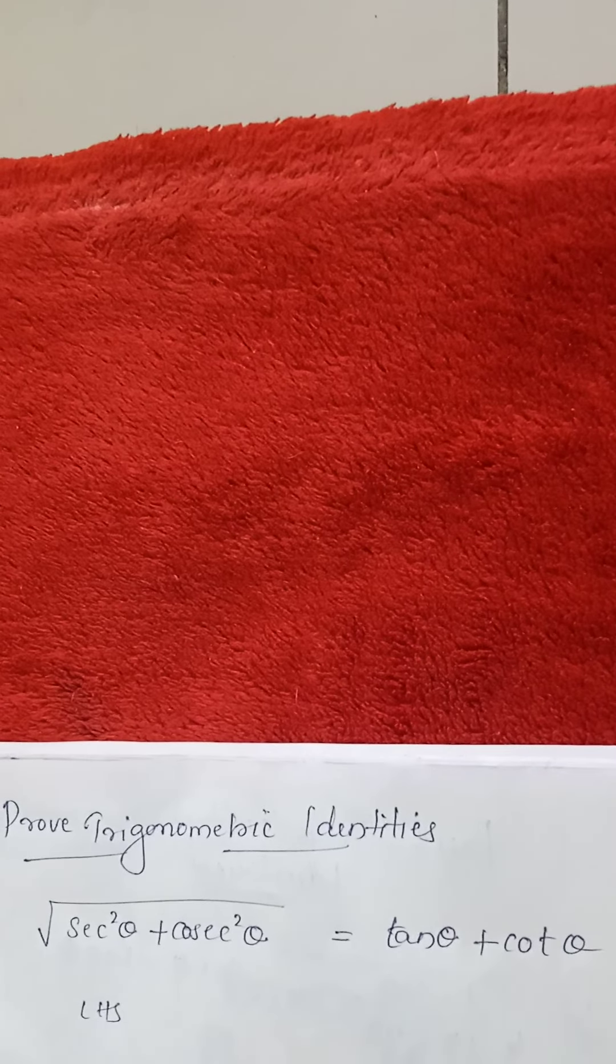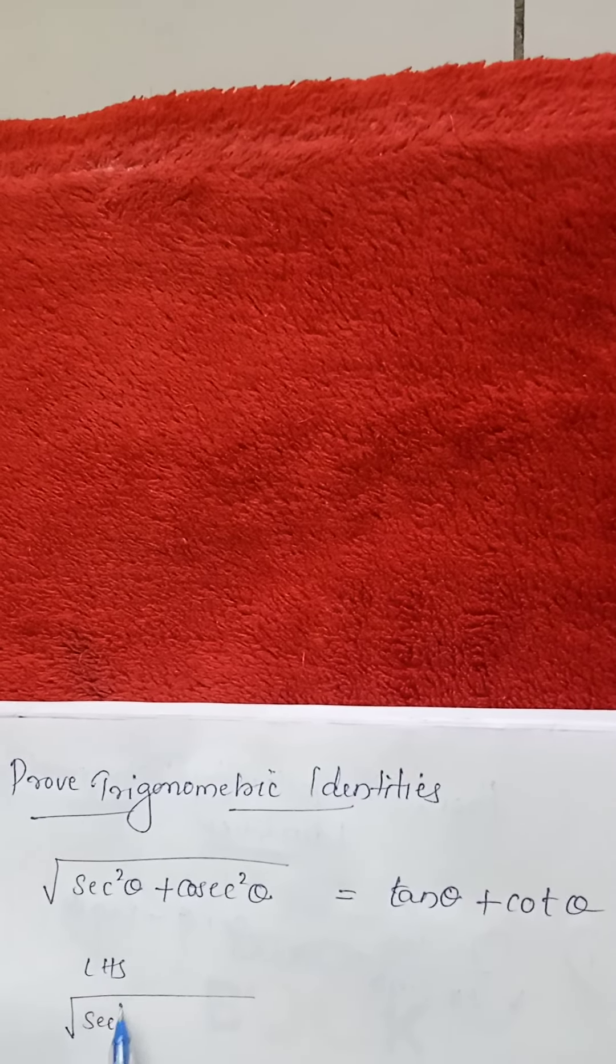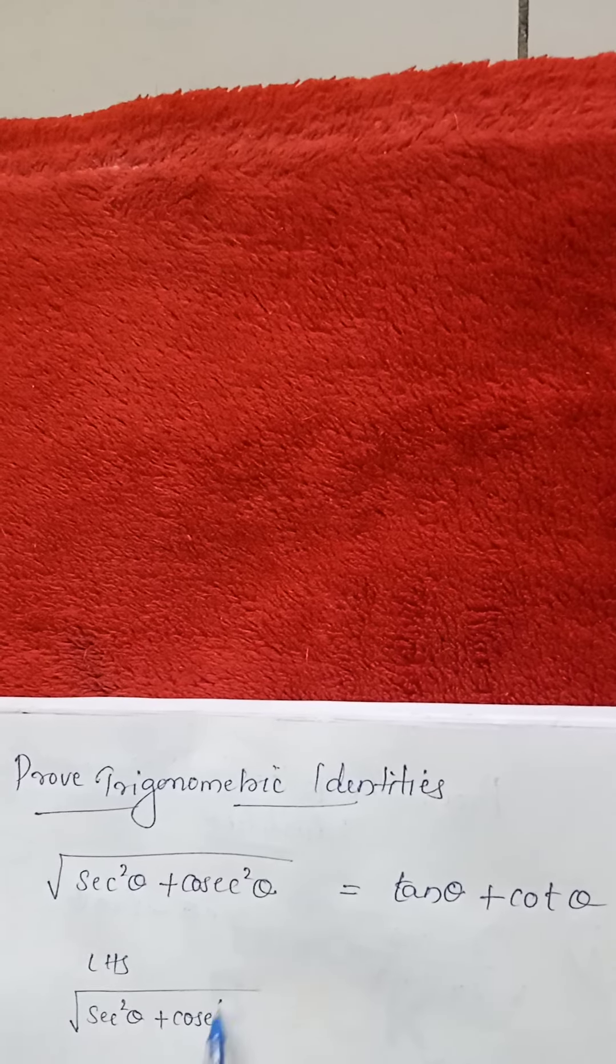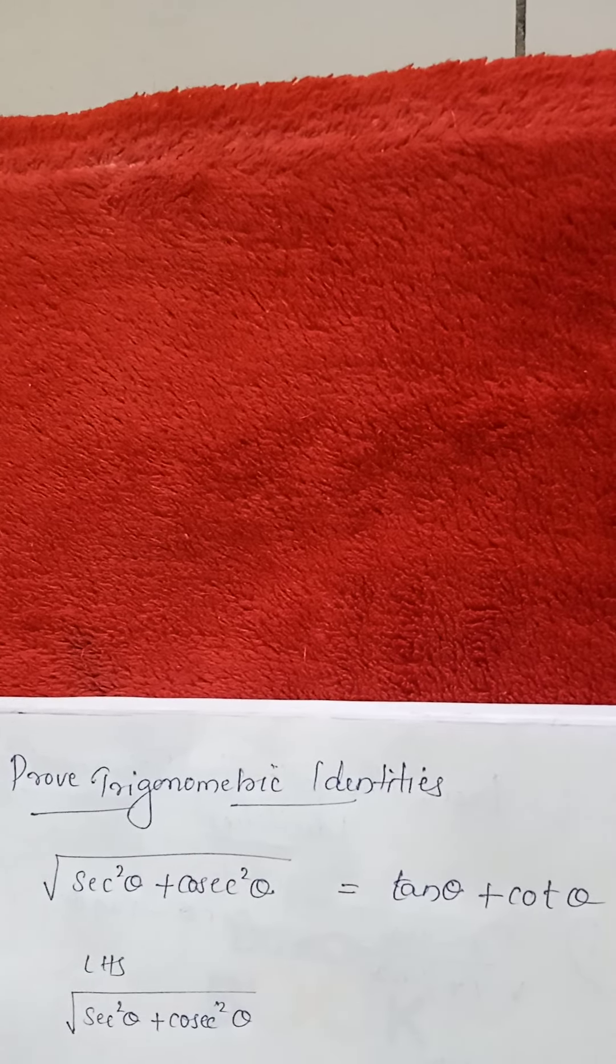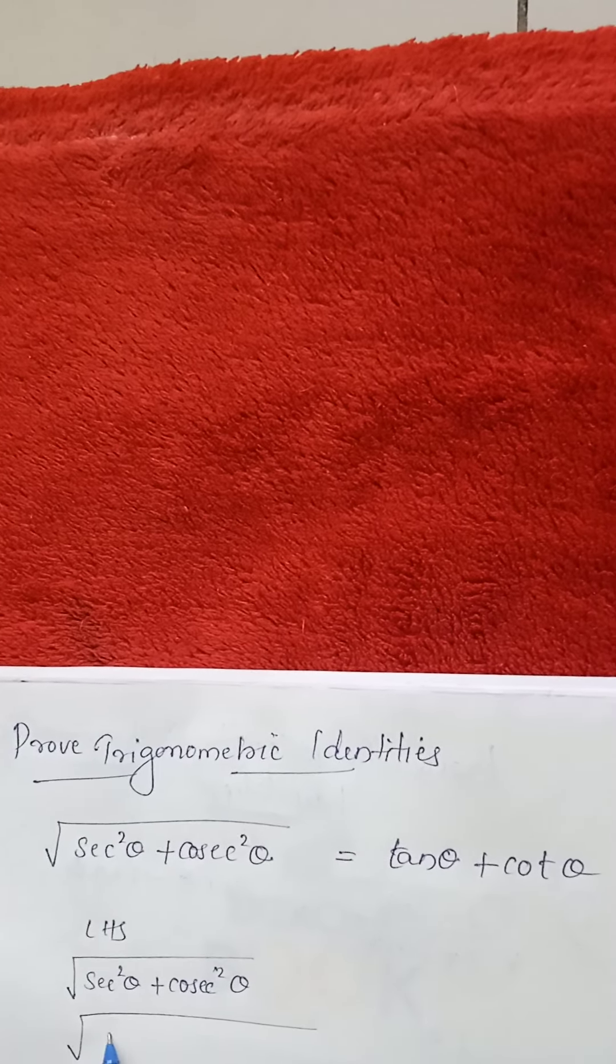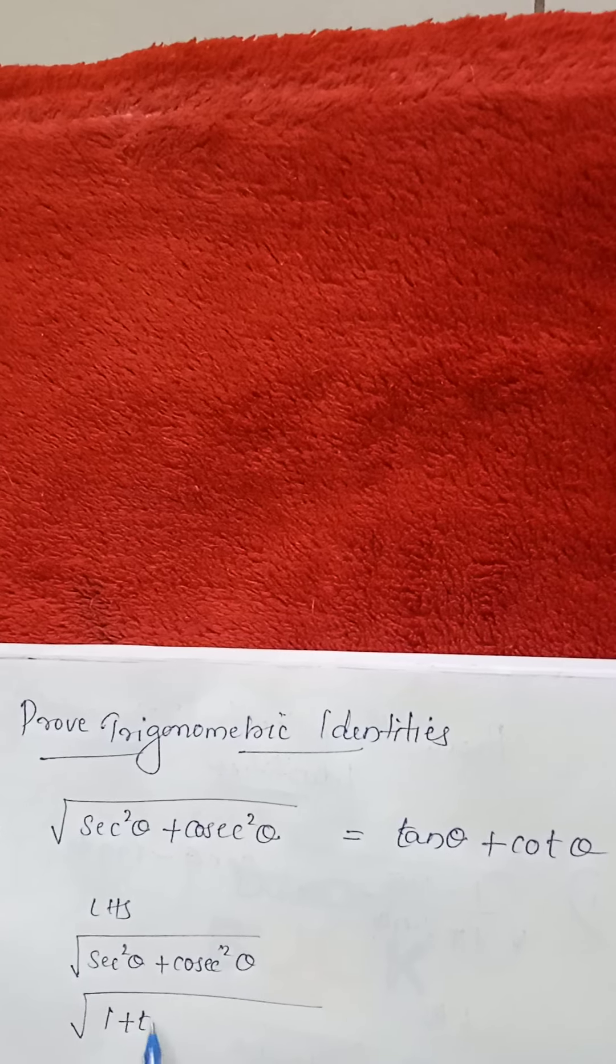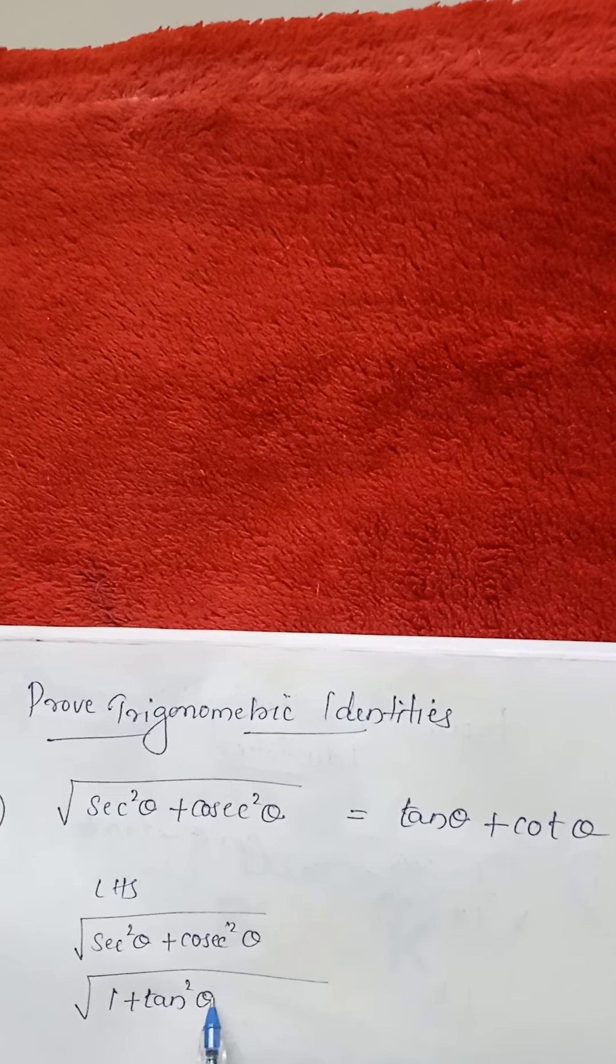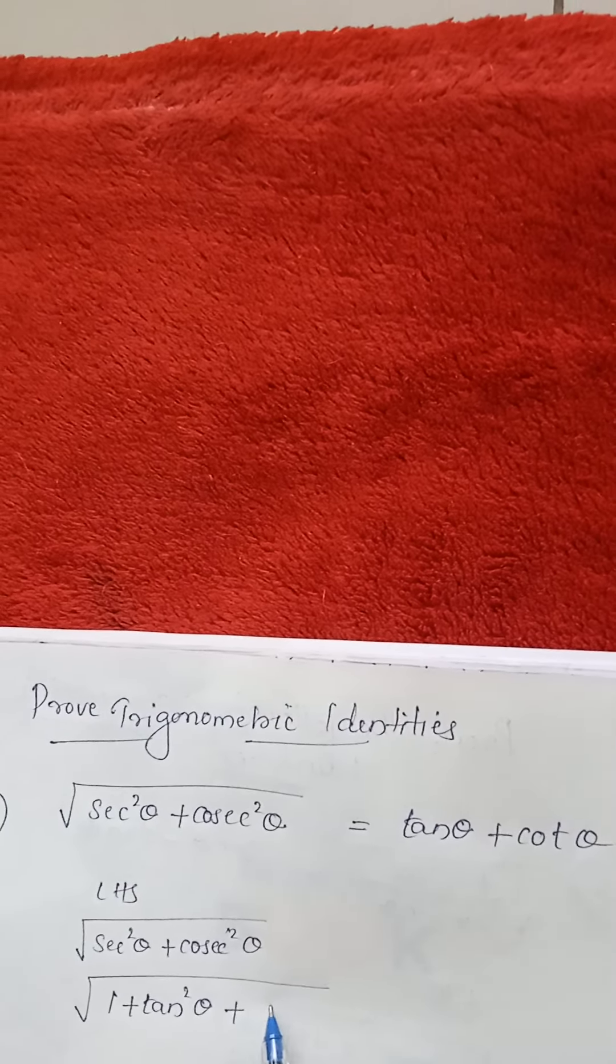Okay, so root of sec square theta plus cosec square theta. As we know, what is sec square theta? Sec square theta is 1 plus tan square theta plus cosec square theta is 1 plus cot square theta.